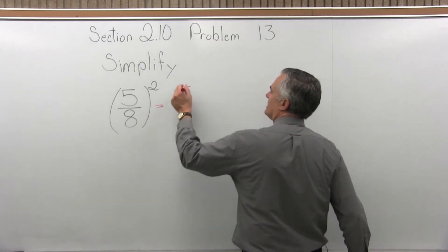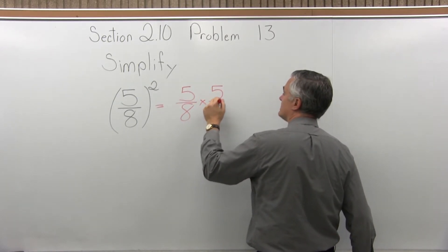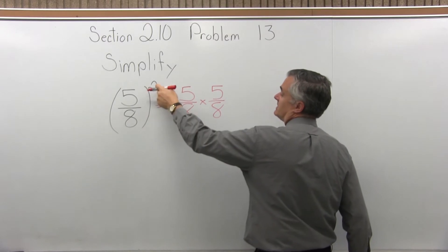So, what we have is 5 eighths times 5 eighths. That's what second power means. It's the value times itself, in this case, twice.